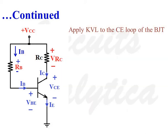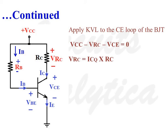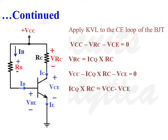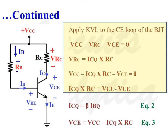Now applying KVL to the collector-emitter loop of the BJT, we get: VCC minus VRC minus VCE equals 0. Since VRC equals ICQ times RC, we write VCC minus ICQ·RC minus VCE equals 0, giving ICQ·RC equals VCC minus VCE. Therefore, VCE equals VCC minus ICQ·RC. We now have expressions for VCEQ and ICQ.